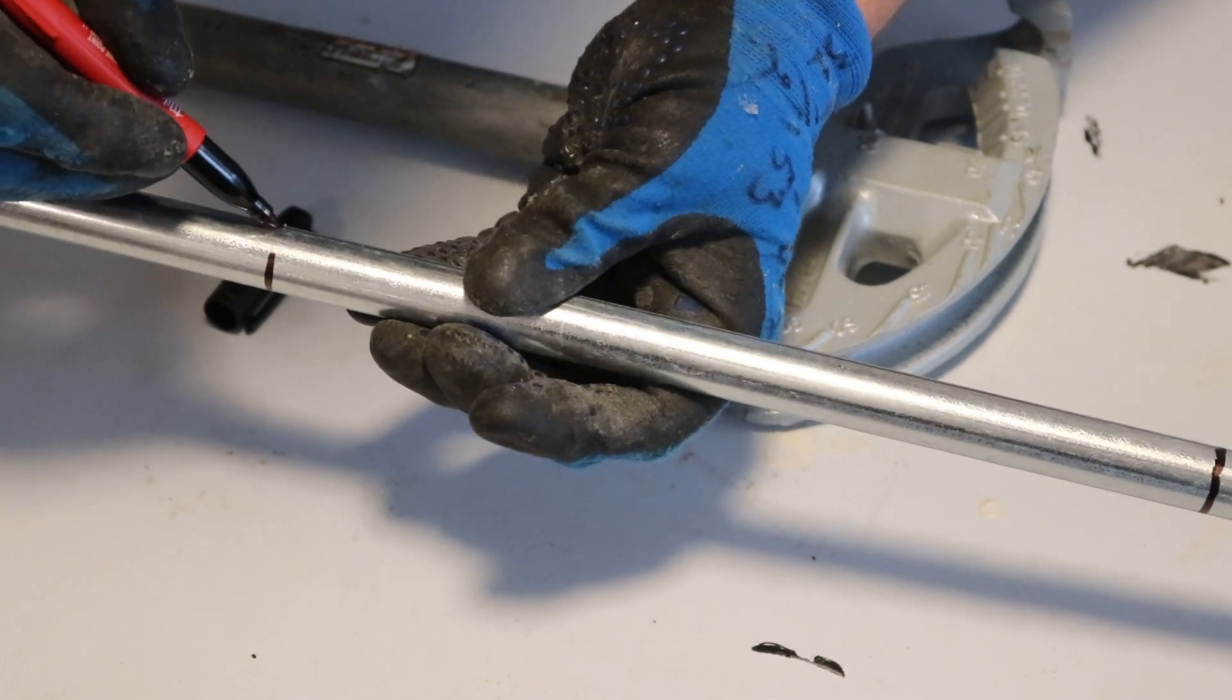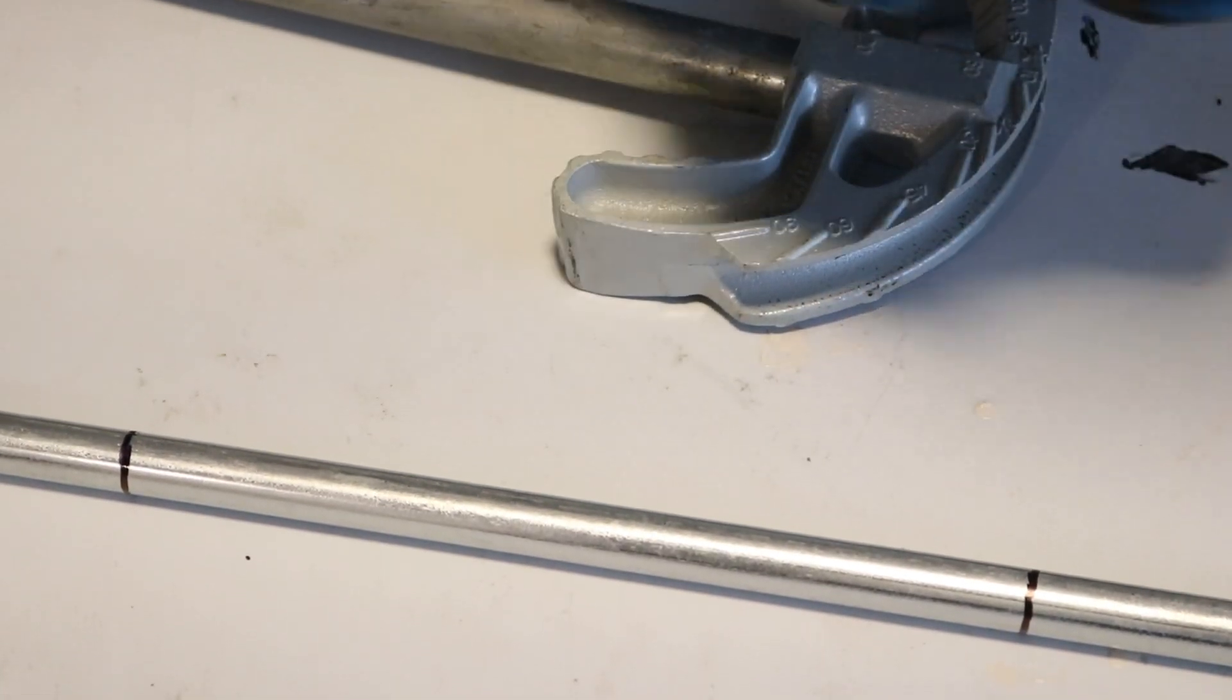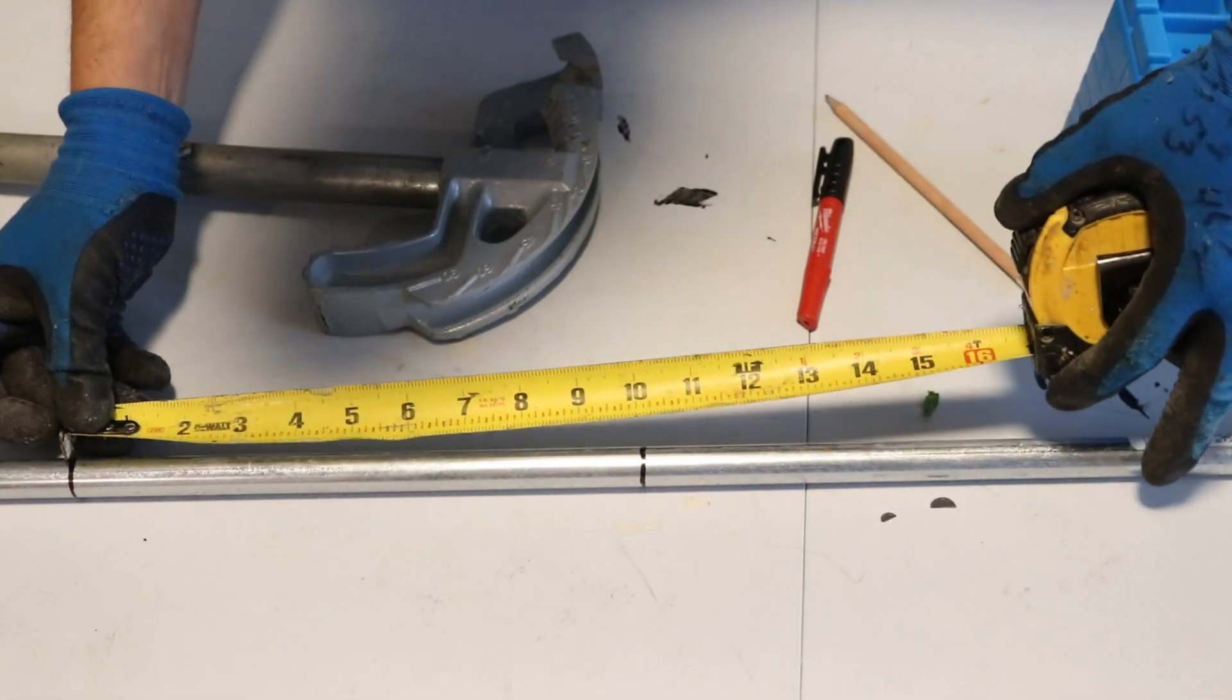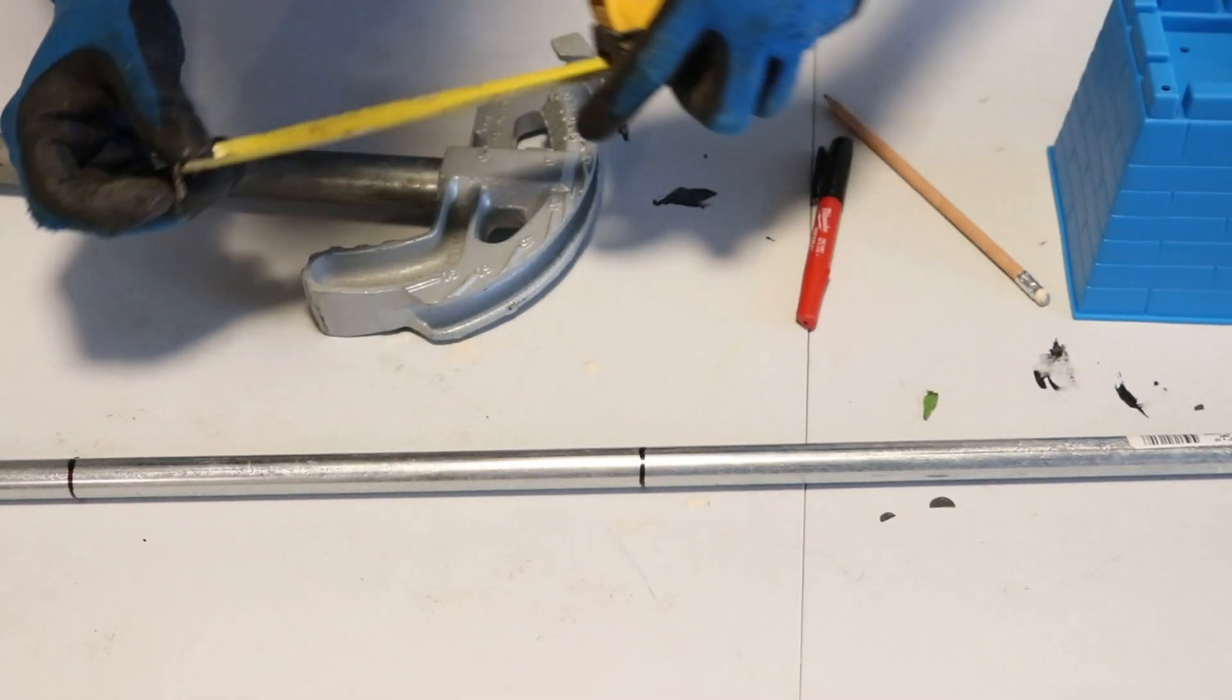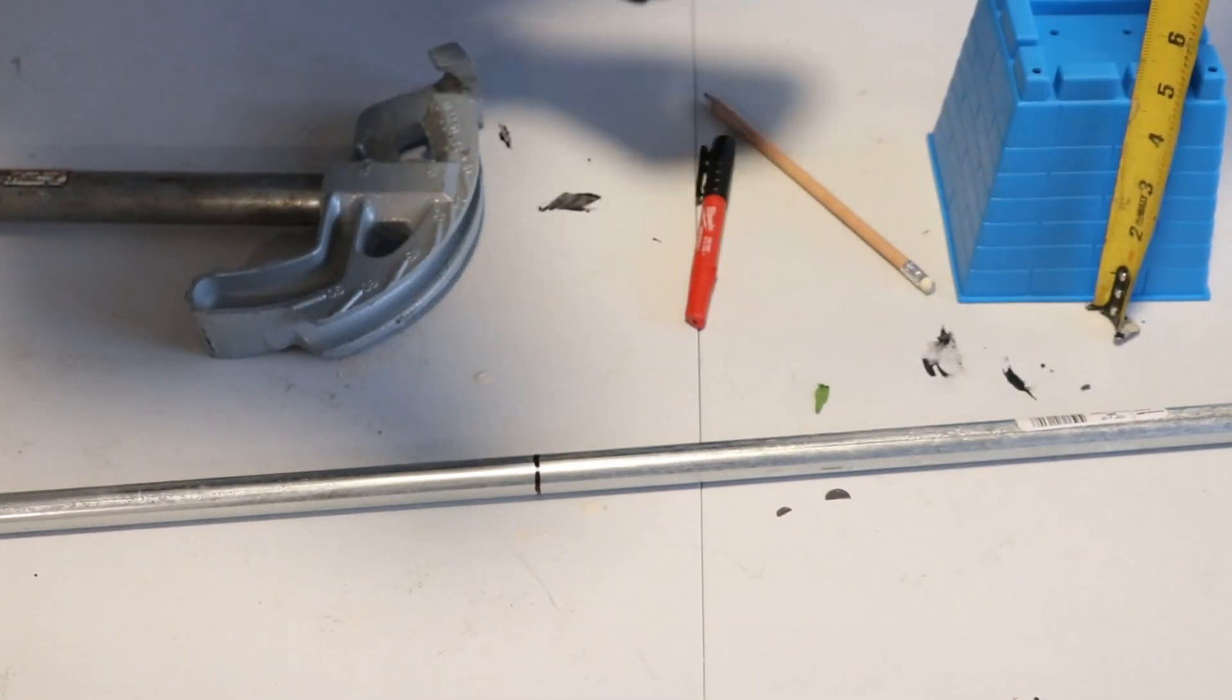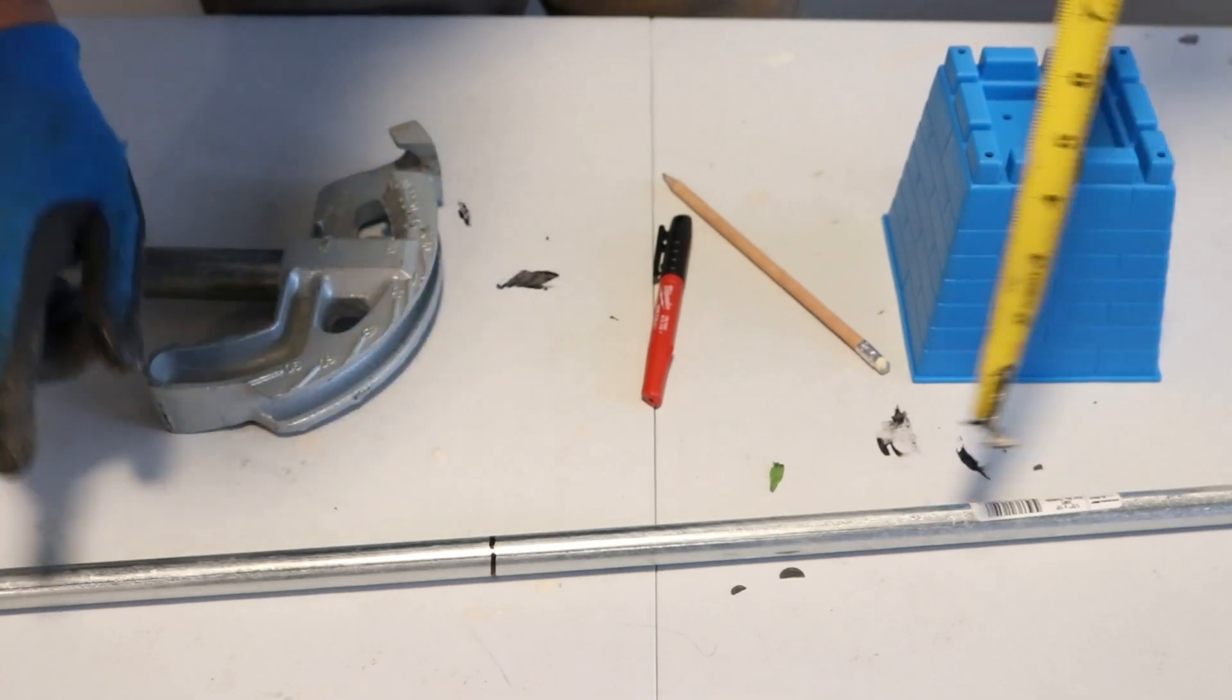Now, as being said, my first mark I did at eight inches, and the second one I did at ten inches. Why I did it? Because we multiply by two. My obstacle is five inches, so five multiplied by two is ten inches. So now we got our marks.